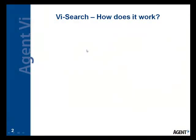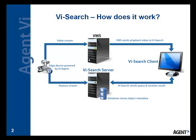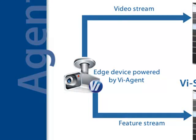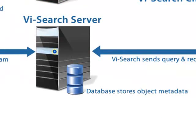VI Search consists of three main components: video indexing, a search engine, and a client application. Video indexing occurs in real time — a software component inside the camera analyzes the video feed as it is being captured, and the results of this analysis are sent back to the VI Search server, which further analyzes them and turns them into a video index.